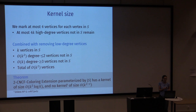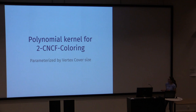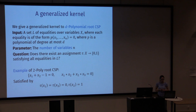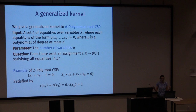Now let's look at 2-CNCF colouring itself. I will give a generalised kernel — a compression — where we take an instance of 2-CNCF colouring and output an instance of a different problem: the polynomial root CSP. We're given a set L of polynomial equalities over variables X, each polynomial having degree at most D. The parameter is the number of variables, and the question is whether we can assign 0 or 1 to each variable such that all equalities are satisfied.